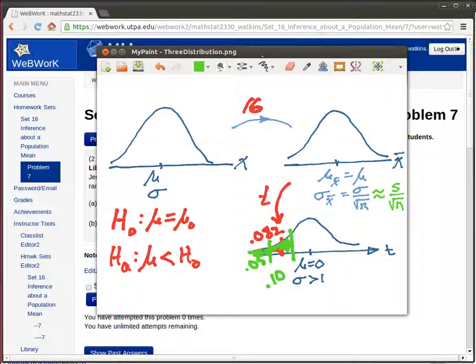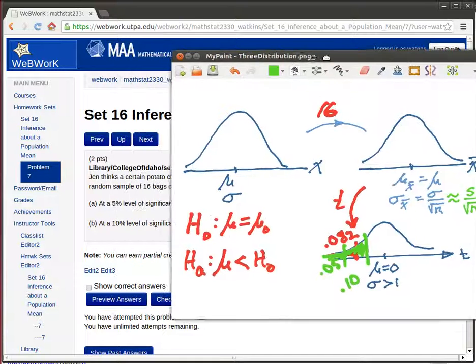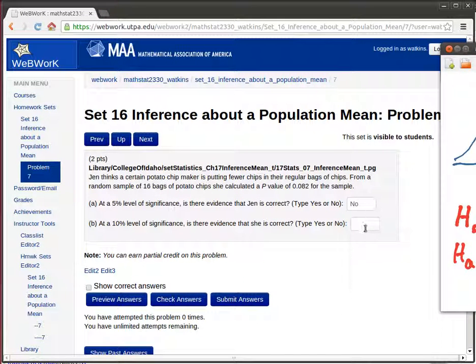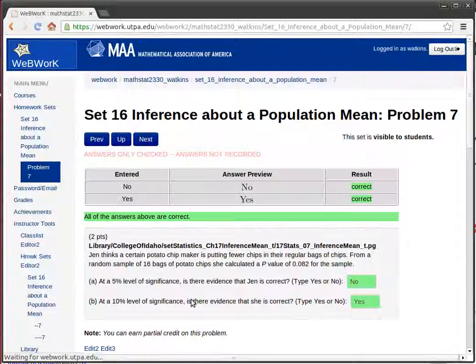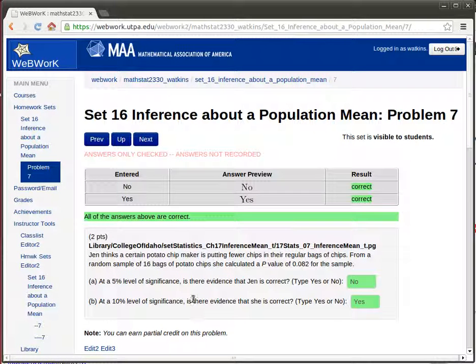Then the score that Jen was getting is down in that danger region. The p-value is low compared to that 10 percent, so the null hypothesis must go and Jen was arguing for the alternative hypothesis, so the answer there is going to be yes. And there's the check.